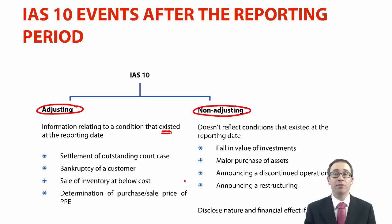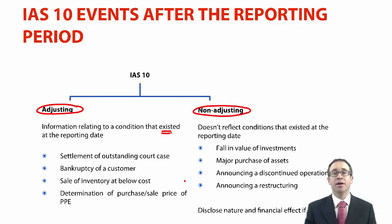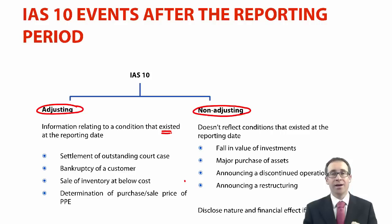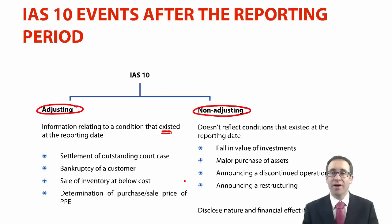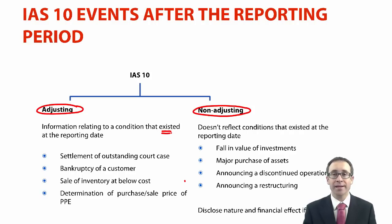Sale of inventory at below cost is another common one from F3. If the inventory you have is now sold at less than what you originally bought it at, that's an indicator the inventory is impaired. So at the reporting date, you need to reduce the value of the inventory to its realisable value if it is below cost — we refer to that as an inventory write-down.